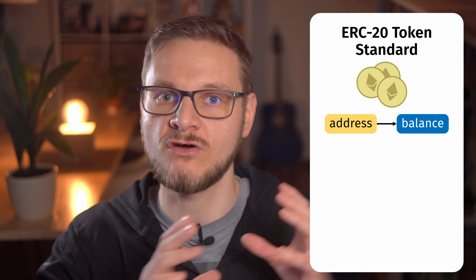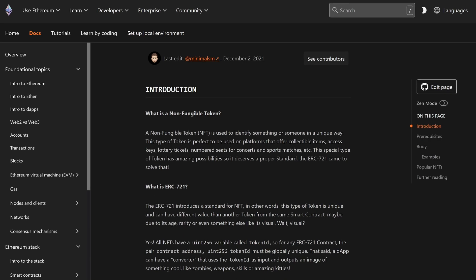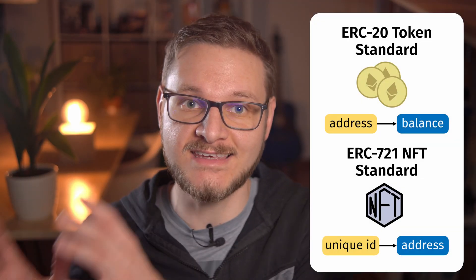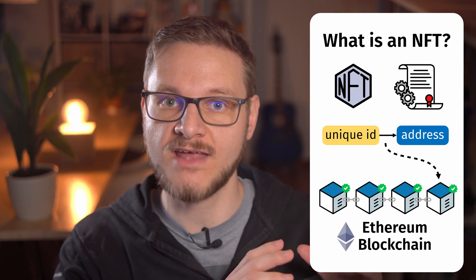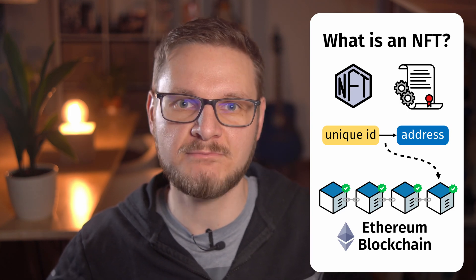While the ERC20 token standard tracks the balance of an account with a mapping of account address to token balance, the ERC721 non-fungible token standard, short NFT, tracks the ownership of a unique ID to an account address, which is the most important distinction between a fungible and a non-fungible token. As ERC721 does not place any restrictions on what the unique ID or NFT represents, the creator of the NFT contract can add multiple different functions to the ownership of an NFT. So an NFT is in its essence an entry in a data structure of a smart contract that associates a unique ID to an account address and establishes a one-to-one mapping. And by the way, when someone says they have an NFT in their wallet, that is technically incorrect because the ownership of an NFT is tracked in the smart contract and not in the balance of someone's blockchain wallet.